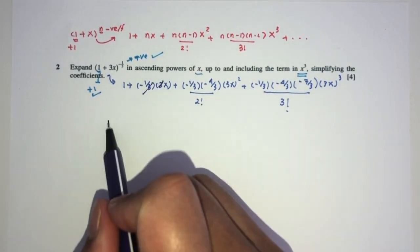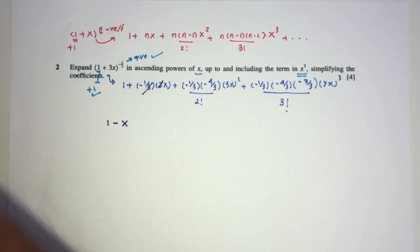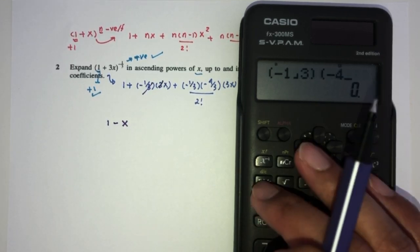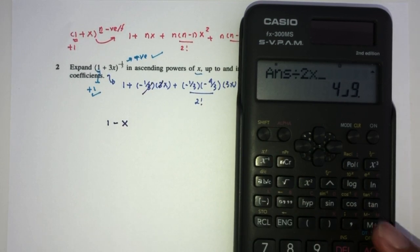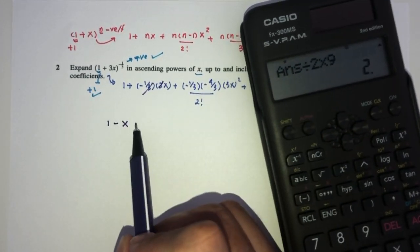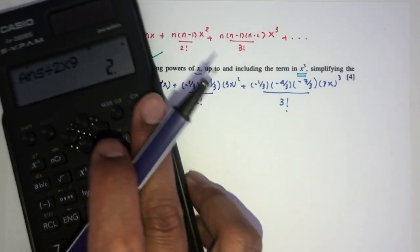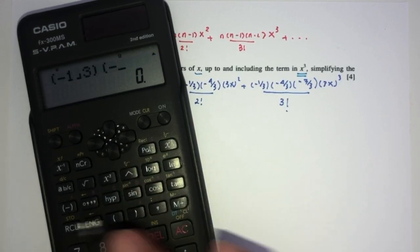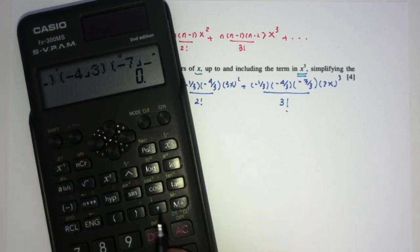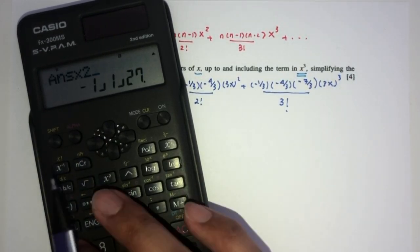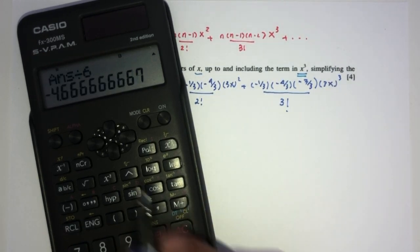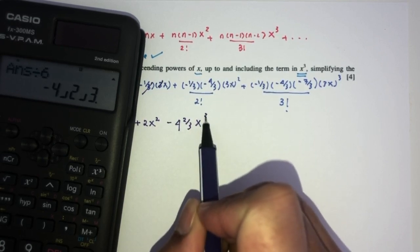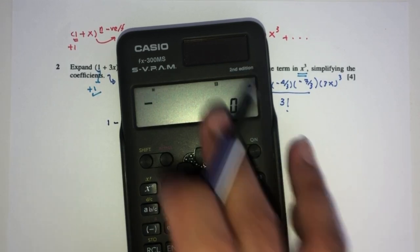Now one by one, this will become 1. Cancel, cancel, you have 1 minus x. Of course, use your calculator, why not? It will be way easier. We have minus 1 over 3 times minus 4 over 3 divided by 2 times 9 for this one. That should be 2. Now for this one, minus 1 over 3 times minus 4 over 3 times minus 7 over 3 times 27 divided by 6. That will be minus 4x cubed.